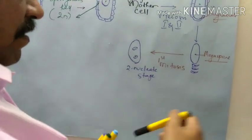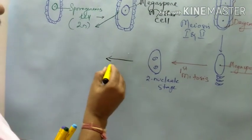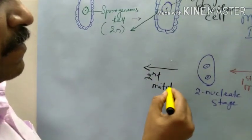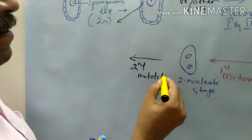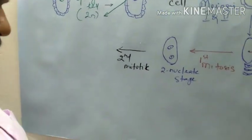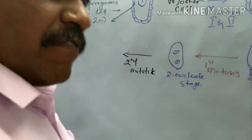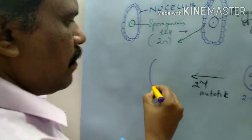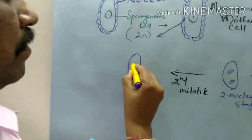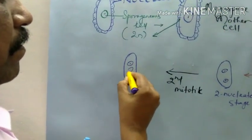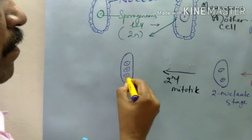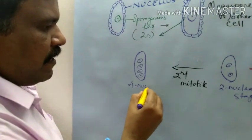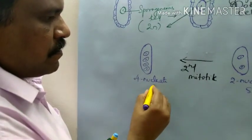And then next, they will go for the second mitosis or second mitotic division. When they are going for the second mitosis, how many are formed out of 2? 4 are formed. So this is called as the 4-nucleate stage.